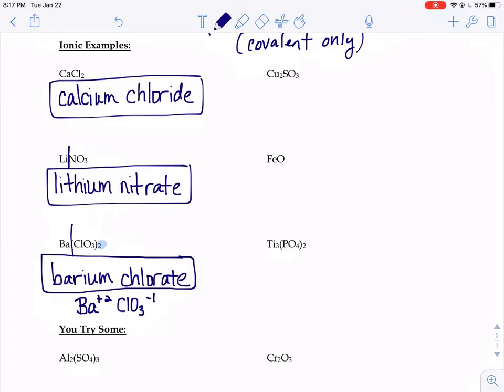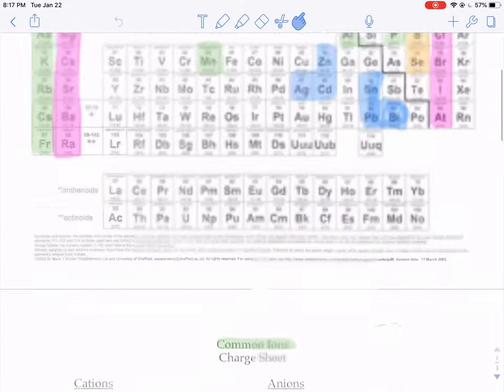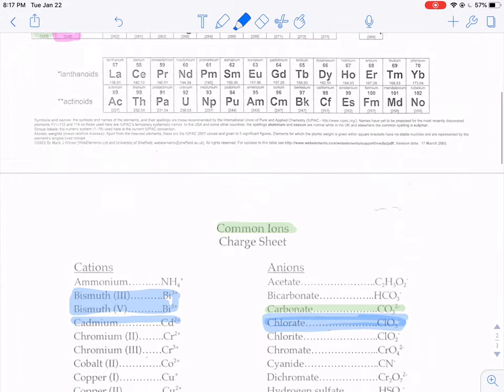When you have Cu2SO3, Cu is copper. We can't just write copper and that's it. Because when we look on the periodic table, copper is in the middle, right here. Copper's charge can fluctuate. It can vary.